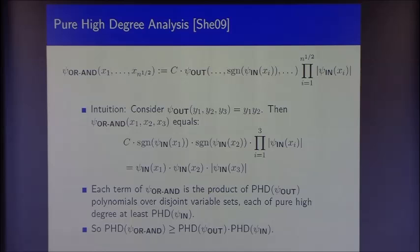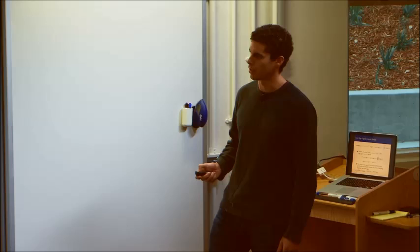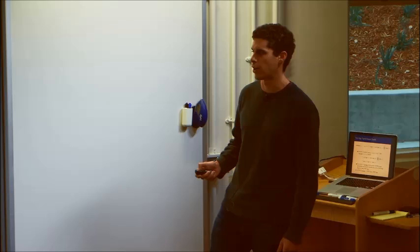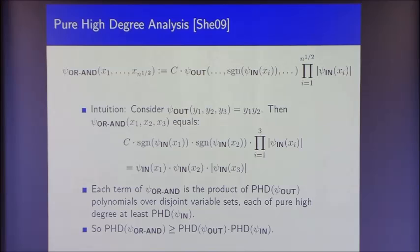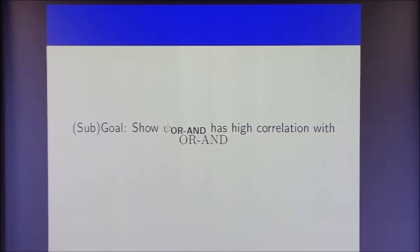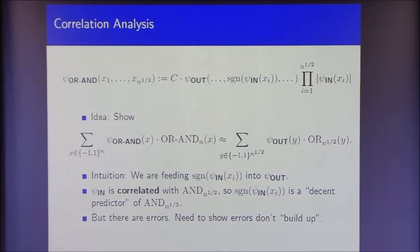For the correlation analysis, we want to show that the combined dual witness has good correlation with the composed target function, approximately equal to the correlation of the outer dual witness with OR. The intuition: sign(ψ_in) is a decent predictor for the inner function because ψ_in is correlated with it. Normally, sign(ψ_in) will agree exactly with the inner function. There are errors, but we just need to show errors don't build up.